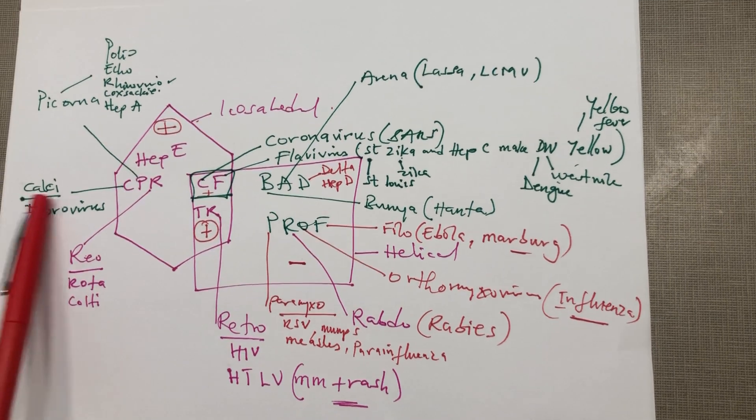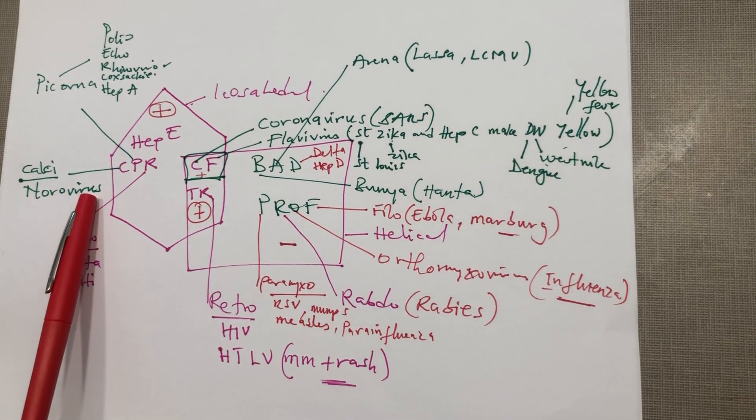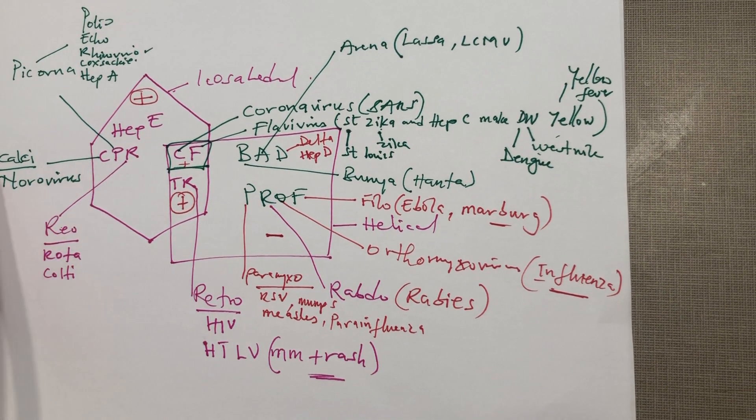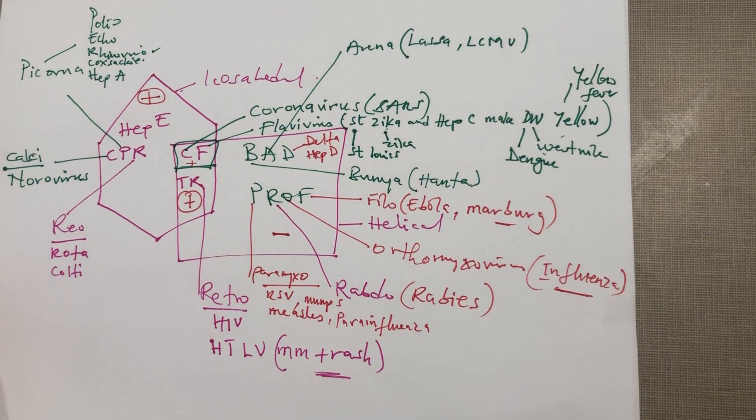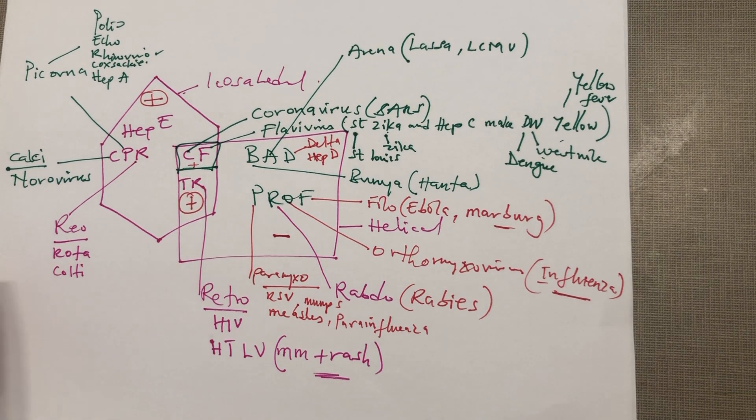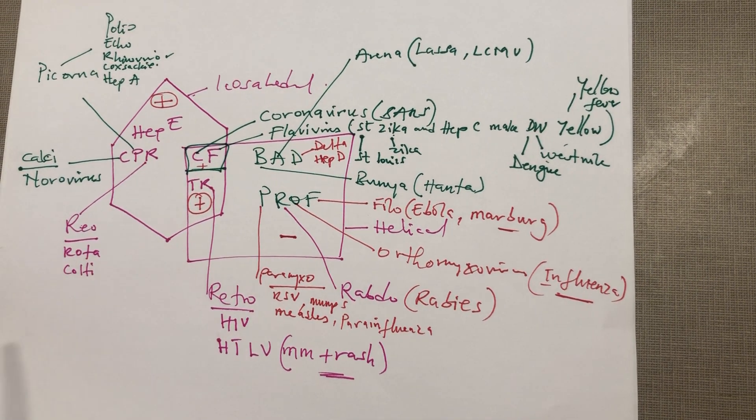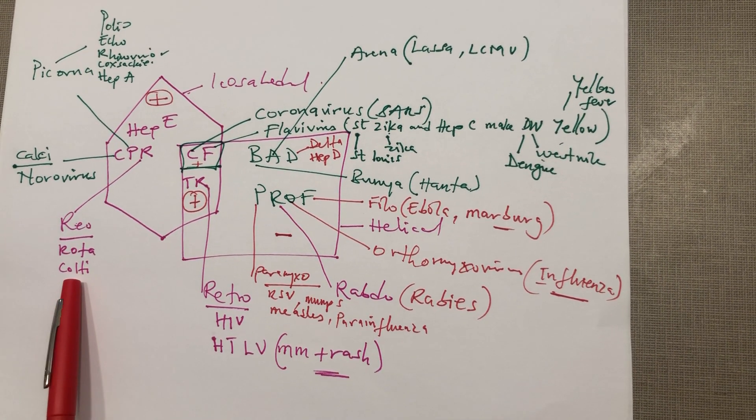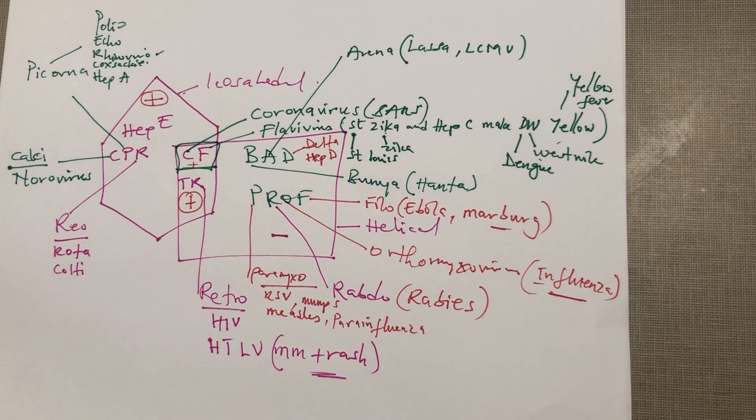We talked about hep E, fulminant hepatitis in pregnant women. We talked about the picorna which are the PERCH. We talked about the norovirus. We have the real virus, and under the real virus you have the rota and the colt.